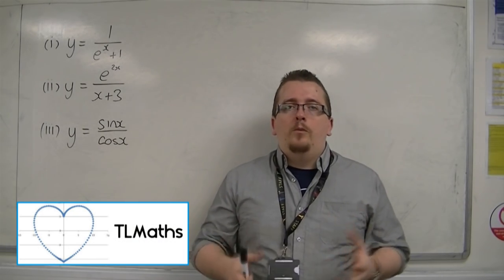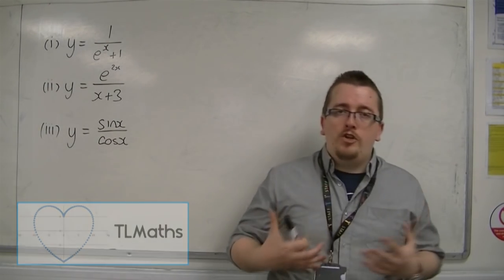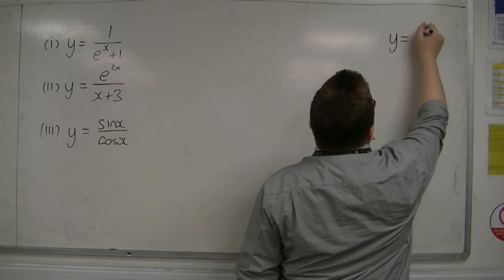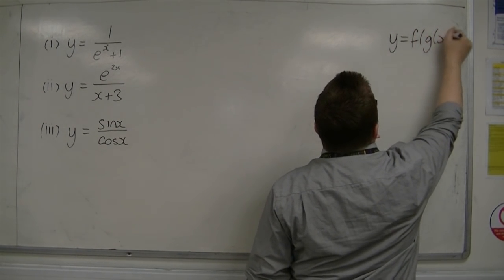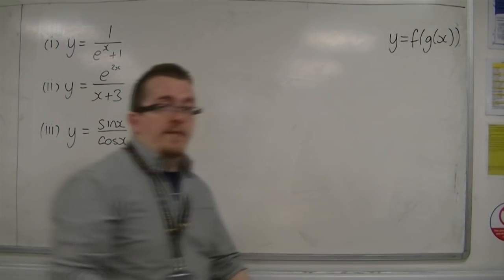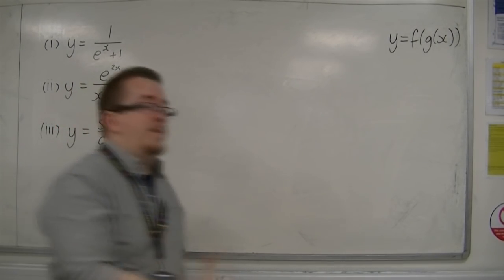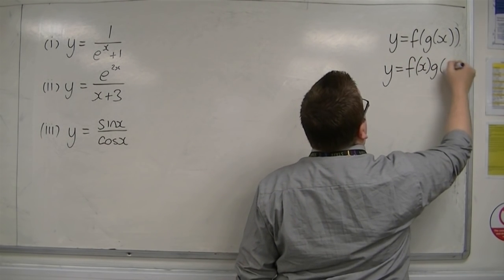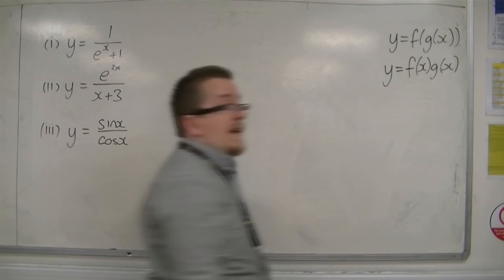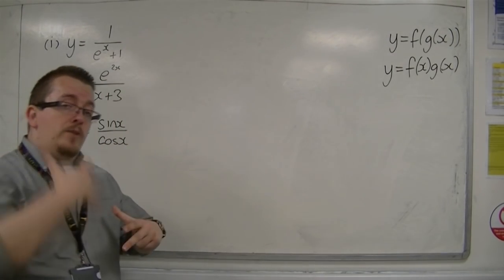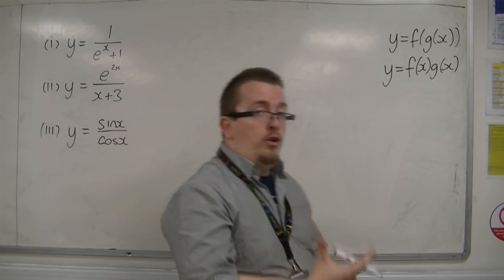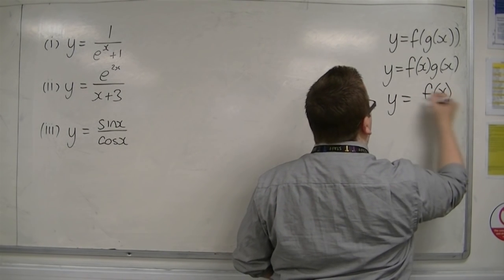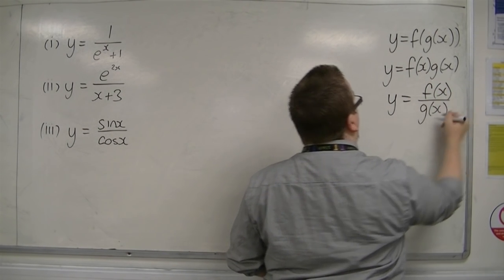In the previous videos, we've looked at two other differentiation techniques. We've looked at the chain rule, which worked for functions within functions, so f of g of x. Then we learned about the product rule, which looks at products of functions — two functions multiplied together. And now in this final video, we're going to be looking at the quotient rule. The quotient rule deals with quotients, which are fractions — a quotient of functions.